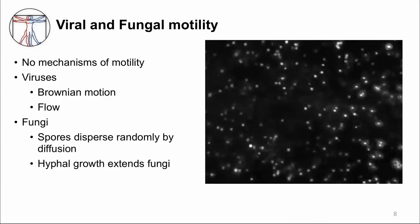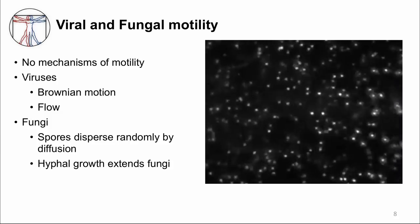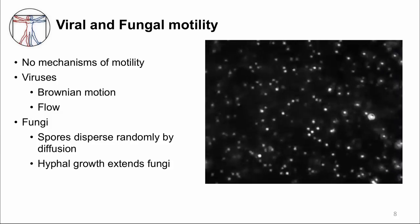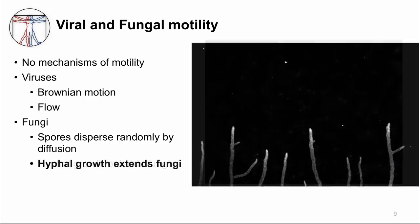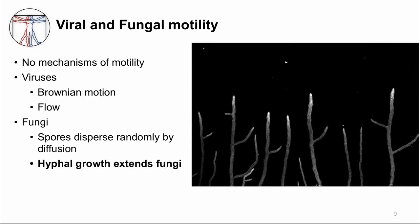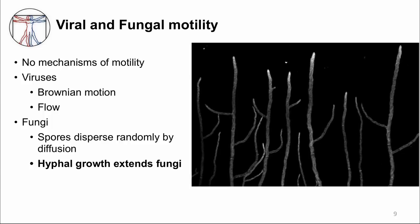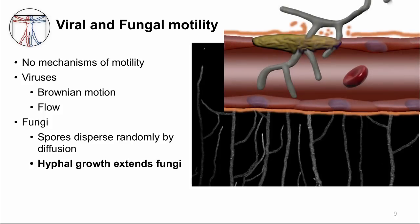So here you can see a movie of Brownian motion. Fungi can invade tissue by growing hyphae. The video shows you growing hyphae. This is not movement, but it sure looks like it. Now, next time you see a patient with a mold infection, you might be able to imagine hyphae growing in your patient and invading into a blood vessel.